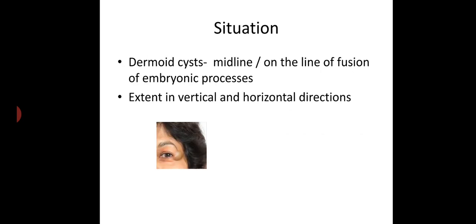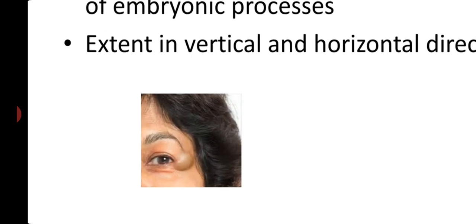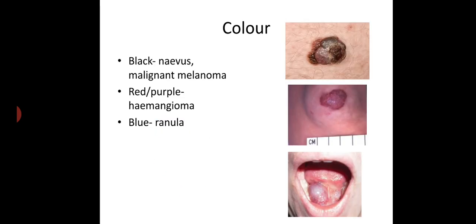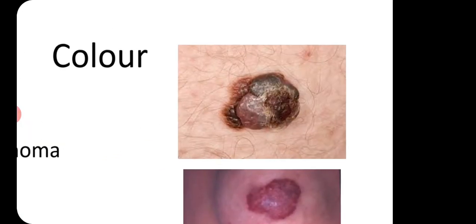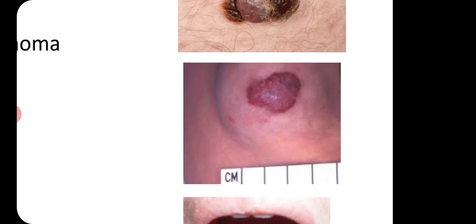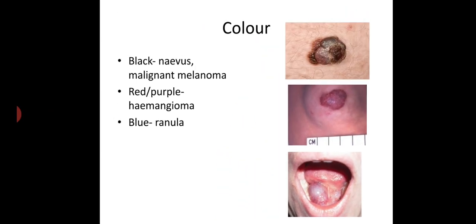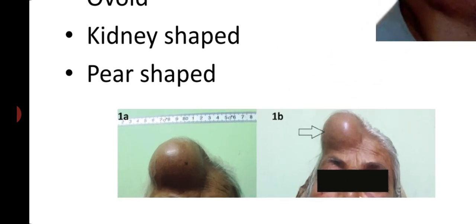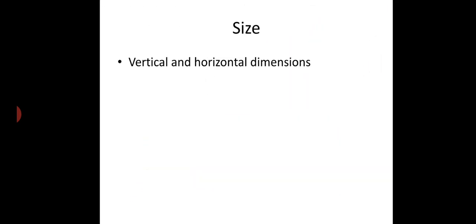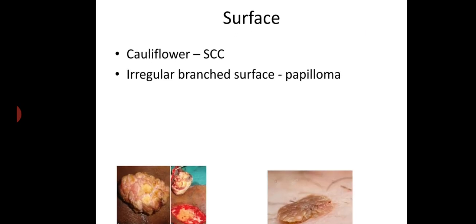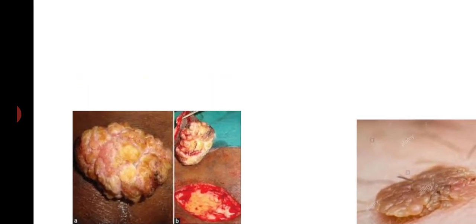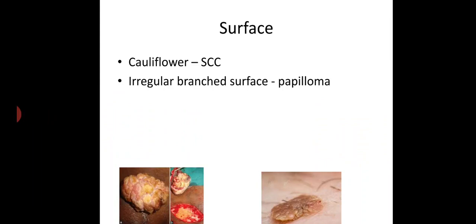Regarding situation — for example, dermoids are usually seen in the midline or on the line of fusion of embryonic processes. We have to mention the site and the extent in vertical and horizontal directions. Regarding color — black in case of nevus or malignant melanoma, red or pink in case of hemangioma, and blue in case of ranula. Shape can be spherical, ovoid, kidney-shaped, or pear-shaped. Size should be mentioned in vertical and horizontal dimensions.